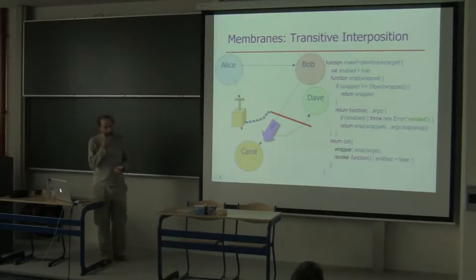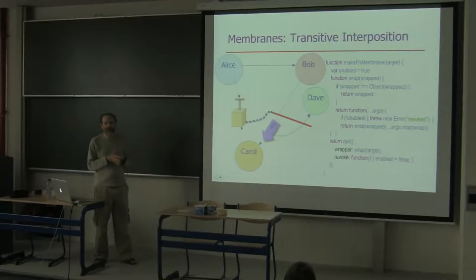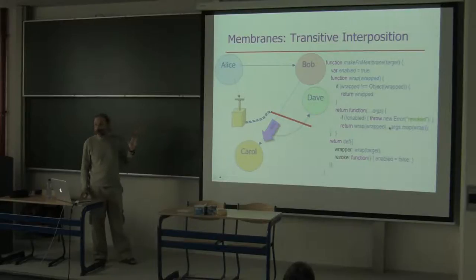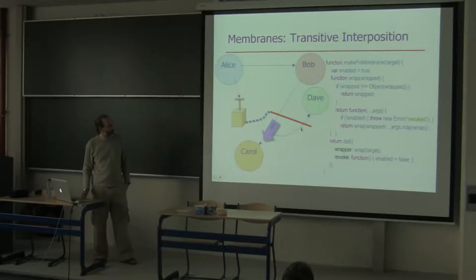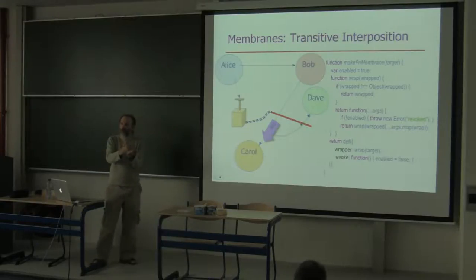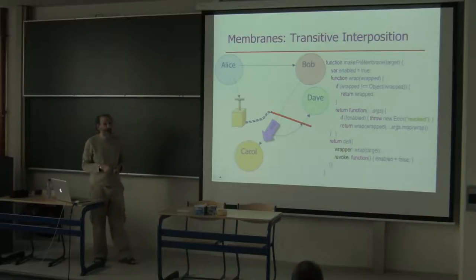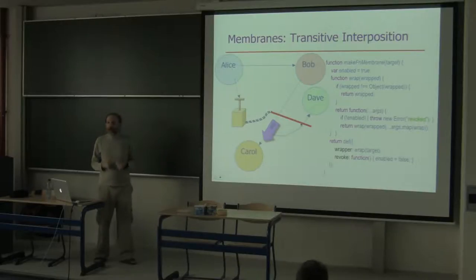The membrane is a generalization of the caretaker that gives us transitive interposition. It starts off acting like a caretaker — Bob has revocable access to Carol — but if Bob sends a message through the membrane, all arguments get threaded back through the membrane, results get threaded through, and any further messages in turn get threaded through. The membrane represents a cut point in the graph, and all connectivity bootstrapped through it is threaded through. When Alice revokes the membrane, she cuts all those references at once — instead of scissors, Alice is shown holding a dynamite plunger.